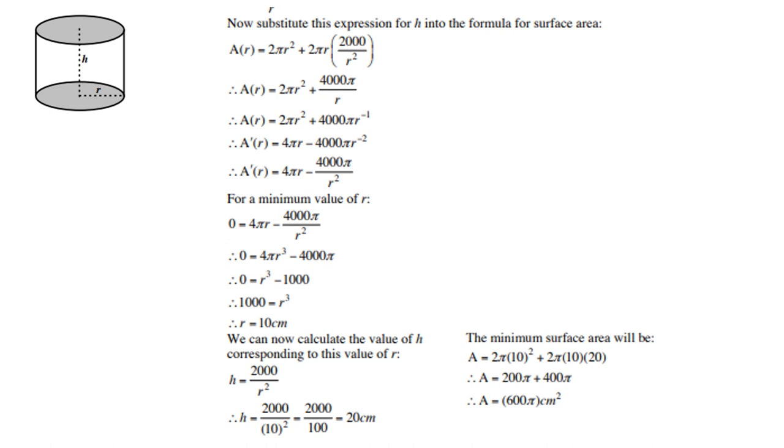A' means the derivative, so you differentiate. Remember, r is the variable, so you differentiate in terms of r. 2 times 2π is 4πr, and negative 1 times 4000 is -4000πr⁻².